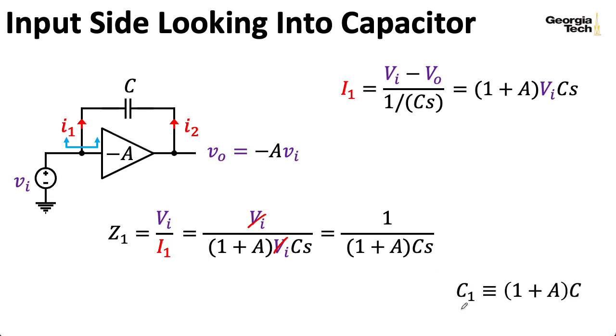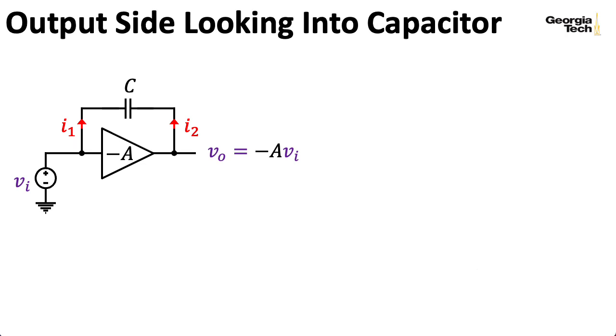So I could define a new capacitance that's just 1 plus A times the original capacitance. Let's call that C1. And I could write this impedance as 1 over C1S. Now, let's look at things from the other direction and look at the impedance looking into the left side of the capacitor. So I can write I2 equals VO minus VI over the impedance, which is 1 over CS. So this is like the expression we just saw for I1, but I've just flipped VO and VI.